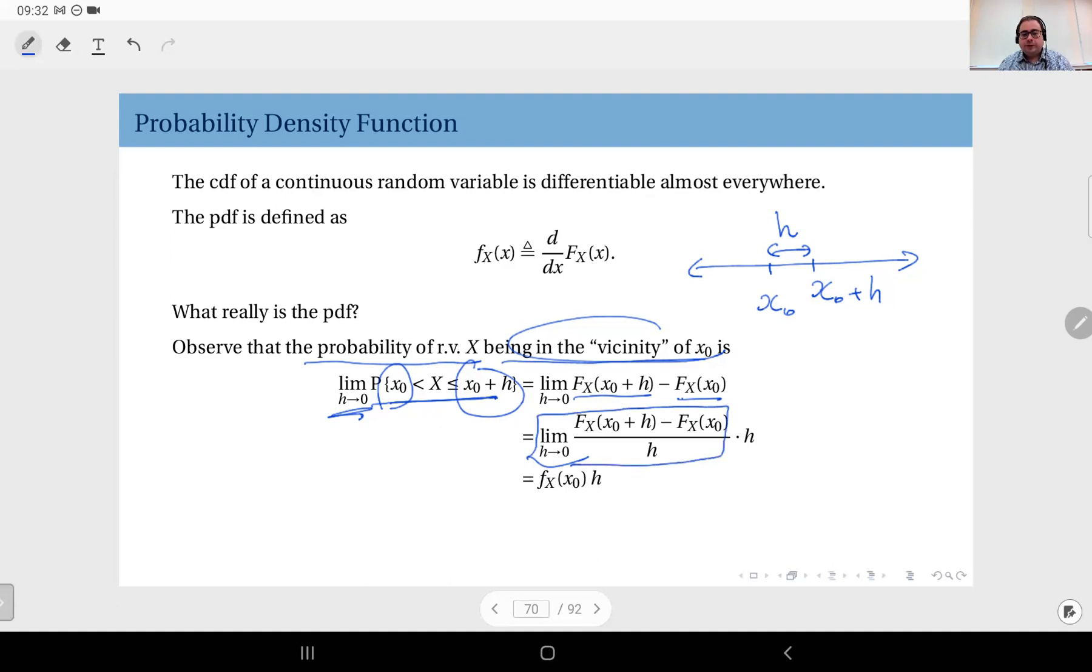But you see, this here, by the definition of derivative, is equal to the derivative of the CDF at x_0, which means by definition it's the PDF value of random variable X at x_0.